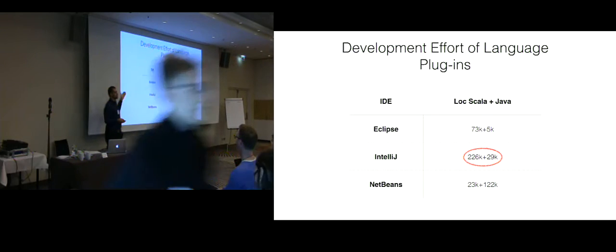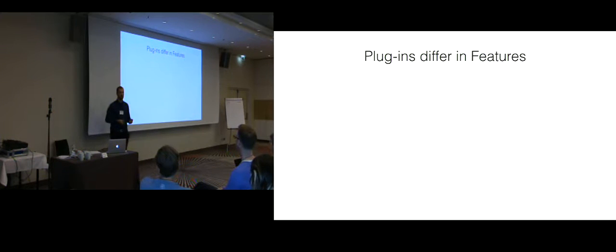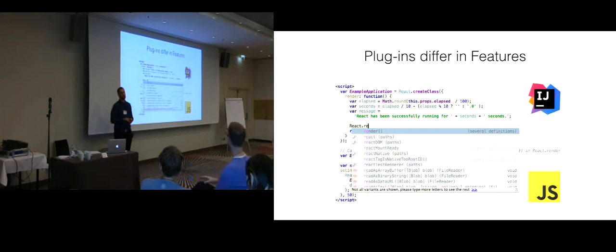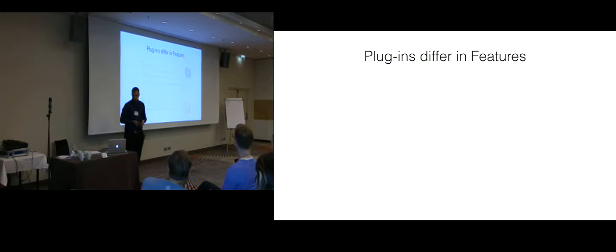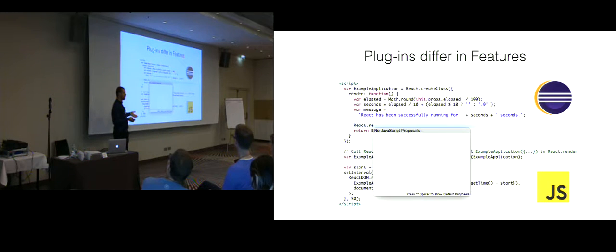The problem with this is that none of these language plugins share any code, so a lot of this effort for these different language plugins is actually redundant. Even worse, language plugins for multiple IDEs differ in features. For example, the IntelliJ plugin for JavaScript has excellent support for code completion — it uses type information to provide this — whereas the Eclipse plugin for JavaScript does not contain this information.